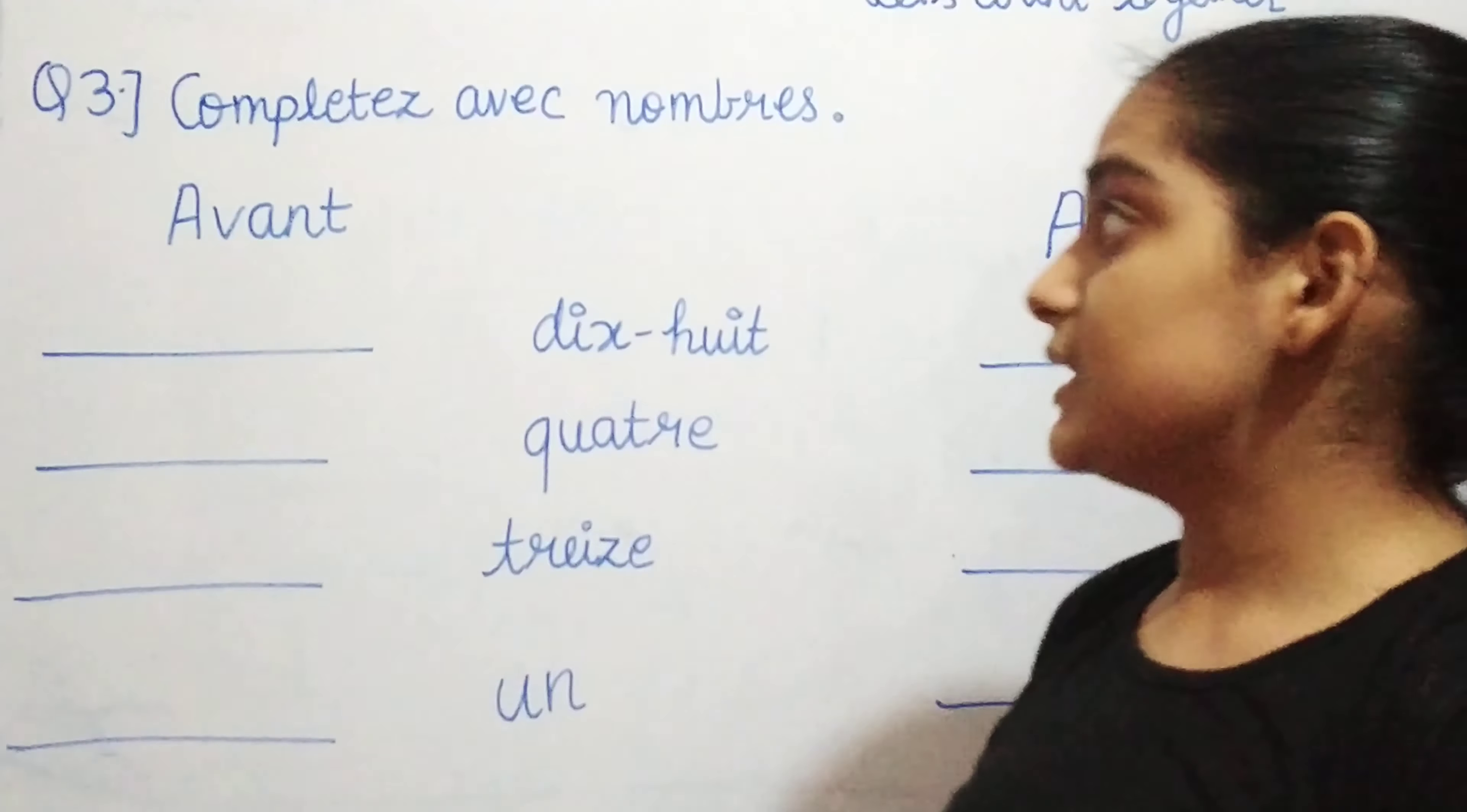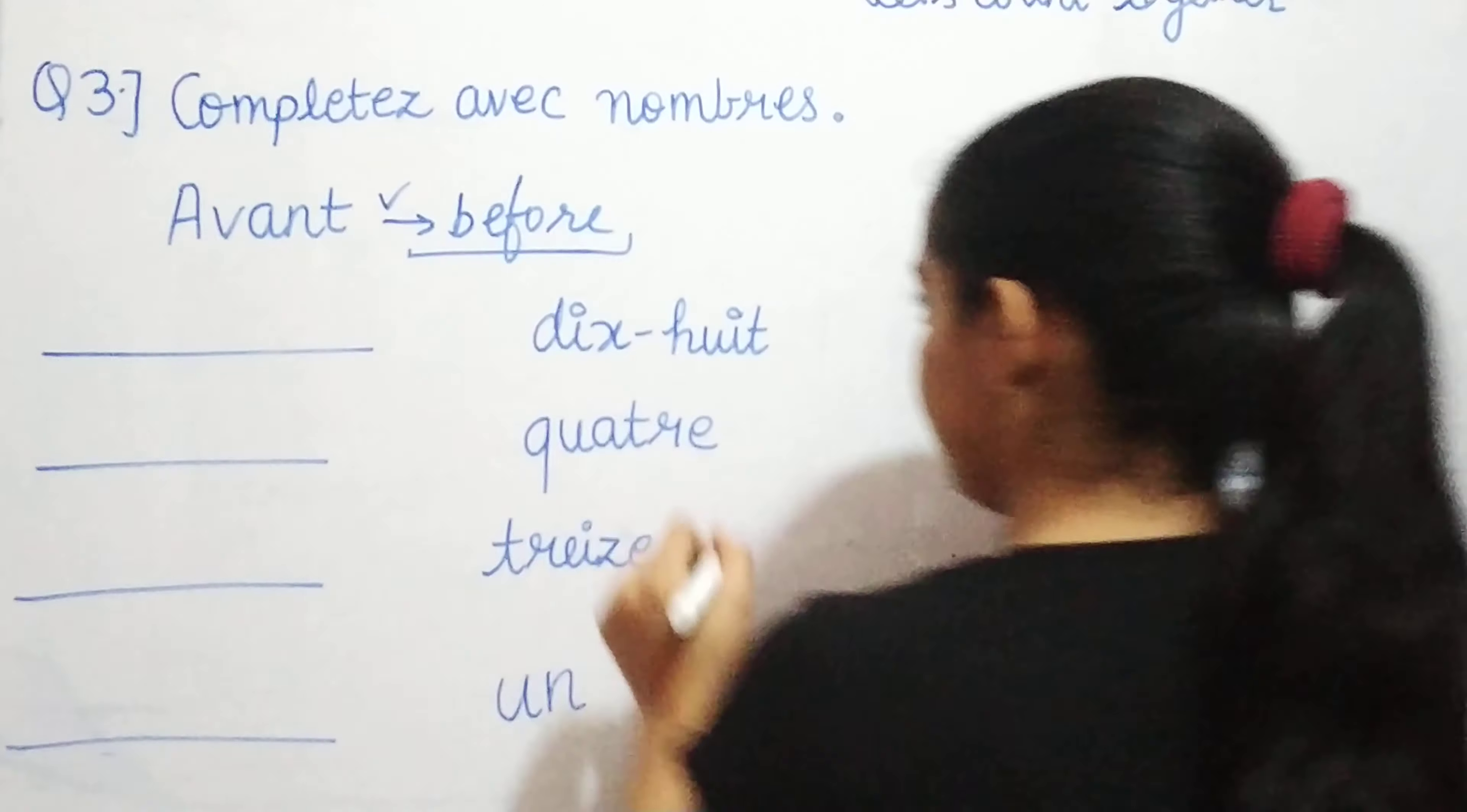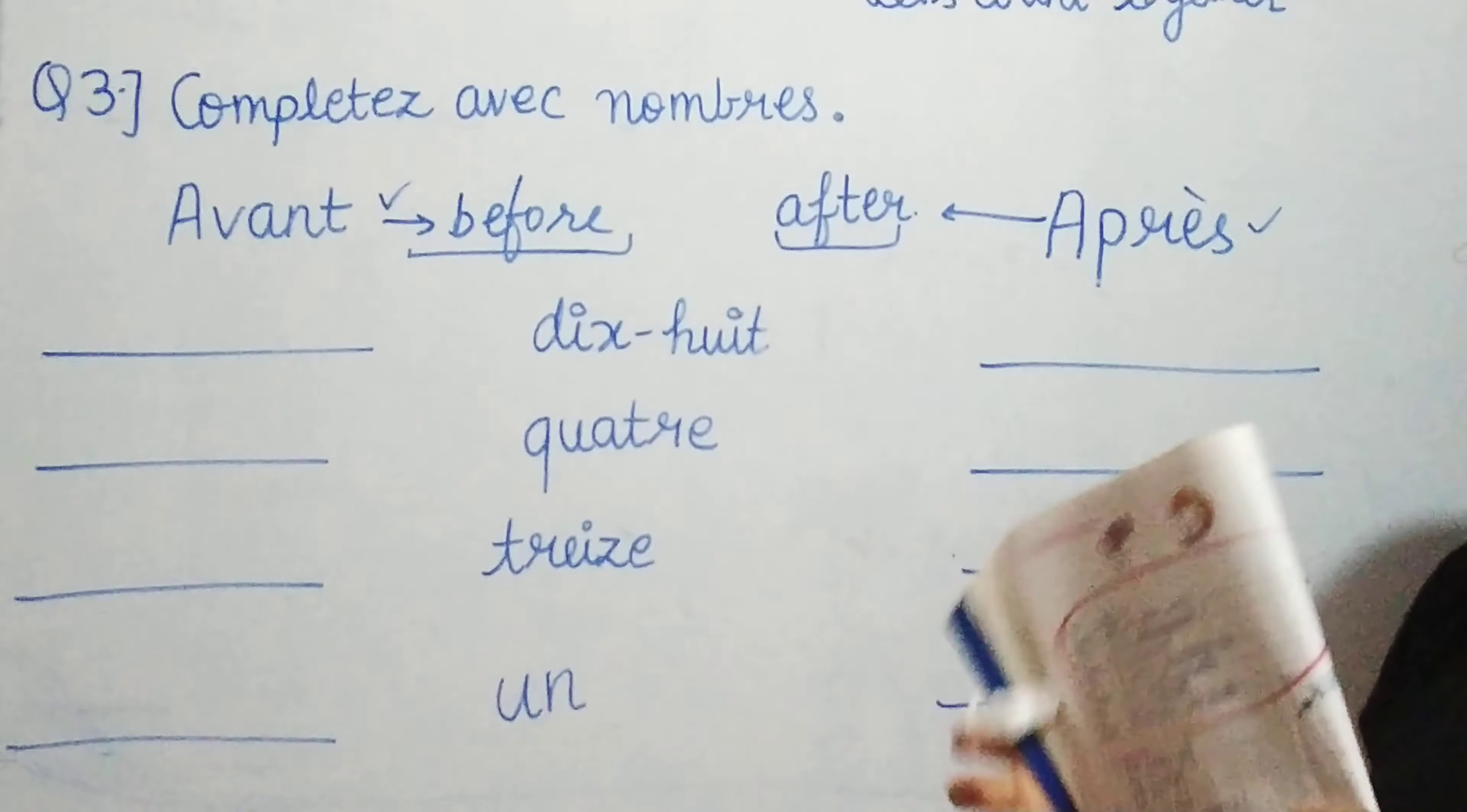Now let's see the third question. That is complétez avec nombres, that means complete with numbers. Now you may be wondering, what is this avant and what is this après? Avant means before. And après means what? After. So this is before and this is after. And what are these numbers? These numbers are given because what comes before this and what comes after this, you have to write them.